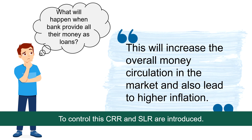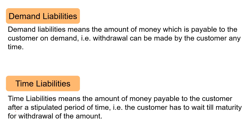Cash Reserve Ratio and Statutory Liquidity Ratio is maintained daily as a percentage of net demand and time liabilities on the last Friday of the second preceding fortnight. Demand liabilities means the amount of money which is payable to the customer on demand — that is, withdrawal can be made by the customer anytime, for example savings account and current account. On the other hand, time liabilities means the amount of money payable to the customer after a stipulated period of time, for example fixed deposit, recurring deposit, etc.